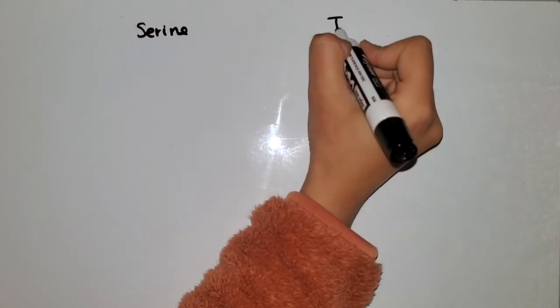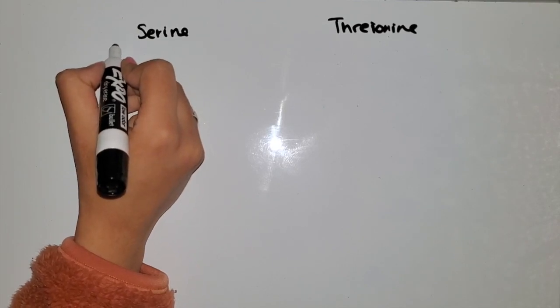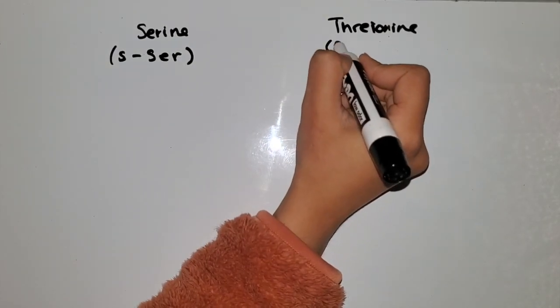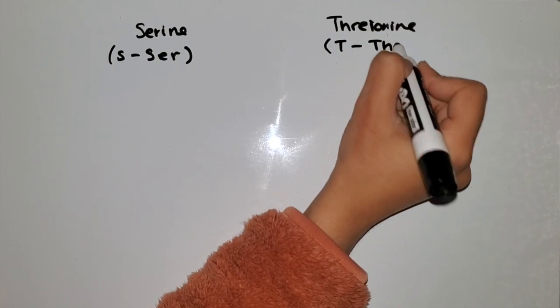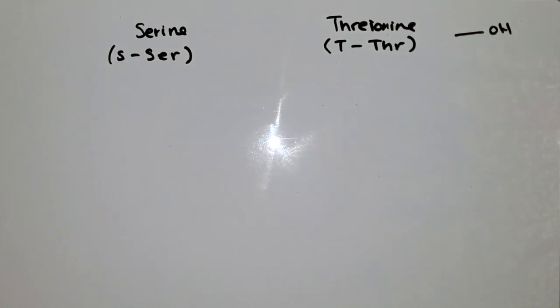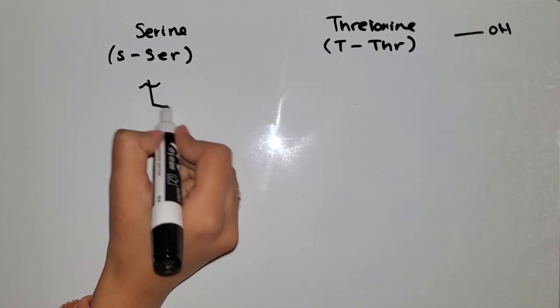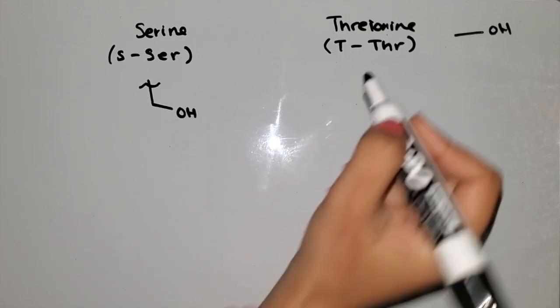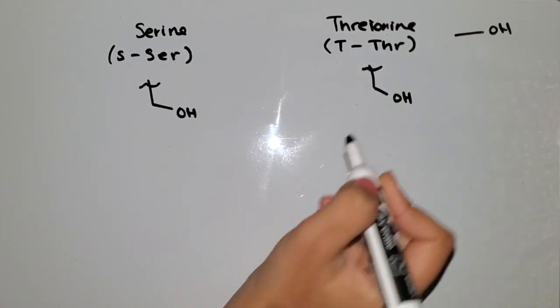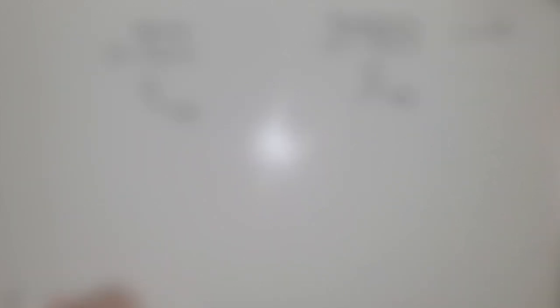Next up are the polar not-charged amino acids. I like to memorize them in pairs. The first pair is serine and threonine — one-letter codes S and T, three-letter codes SER and THR. The reason I pair them is because these two have an alcohol group. Serine is one carbon and then an alcohol group. Threonine is one carbon and an alcohol group, except it has an additional methyl group.